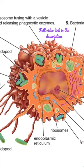The mononuclear phagocyte system cells all share similar features in common. They are large cells, about 15 to 25 micrometers in diameter.